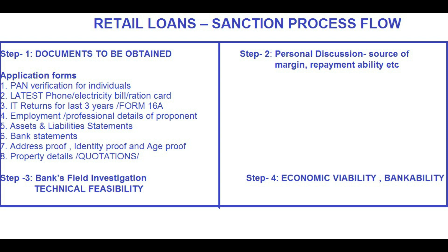The sanction process flow of retail loans begins with Step 1: obtaining documents from the customer — application forms, KYC documents, income documents like latest salary slip, Form 16, last three years ITR, employment or professional details, asset and liability statements, bank statements, address proof, identity proof, age proof, and property details like quotations and estimates. Step 2 is personal discussion covering source of margin and repayment ability.